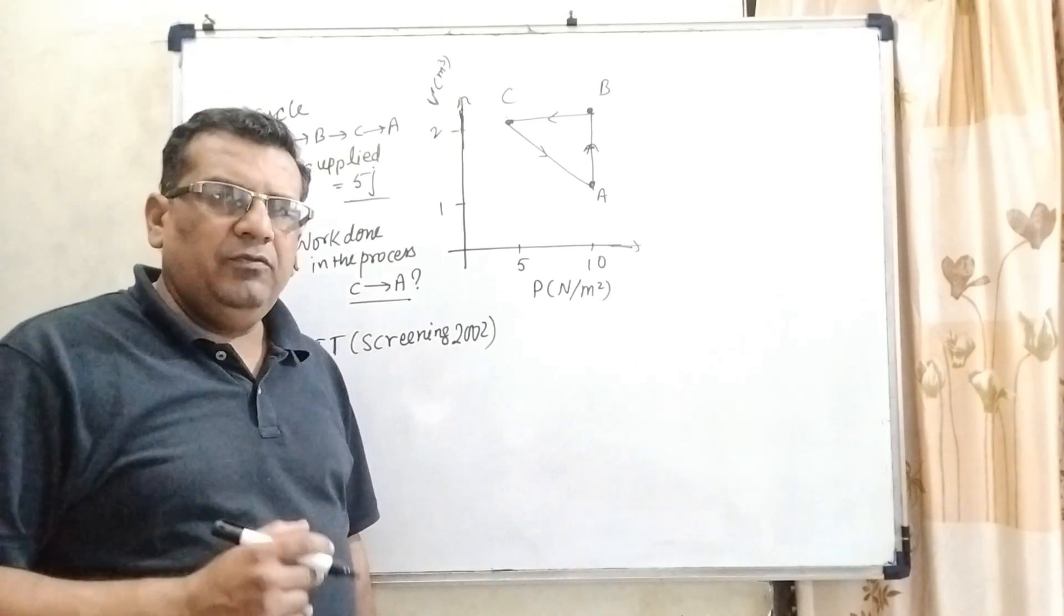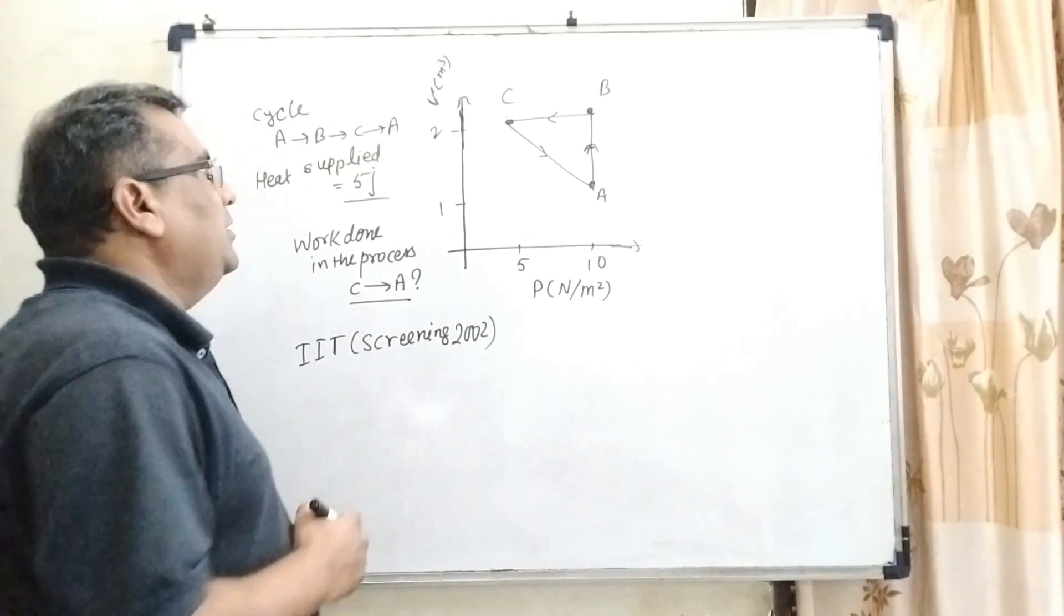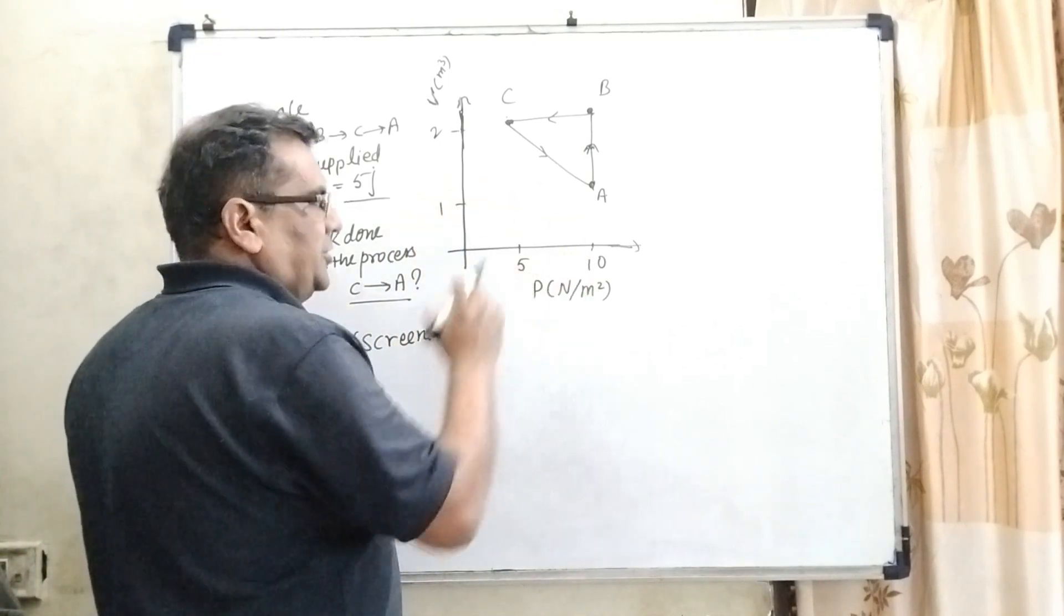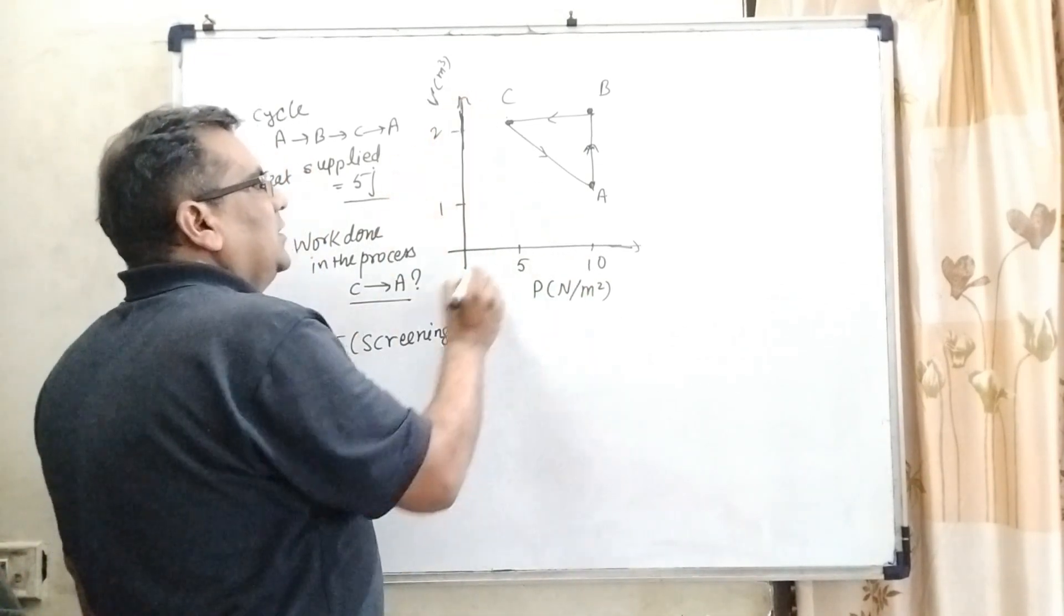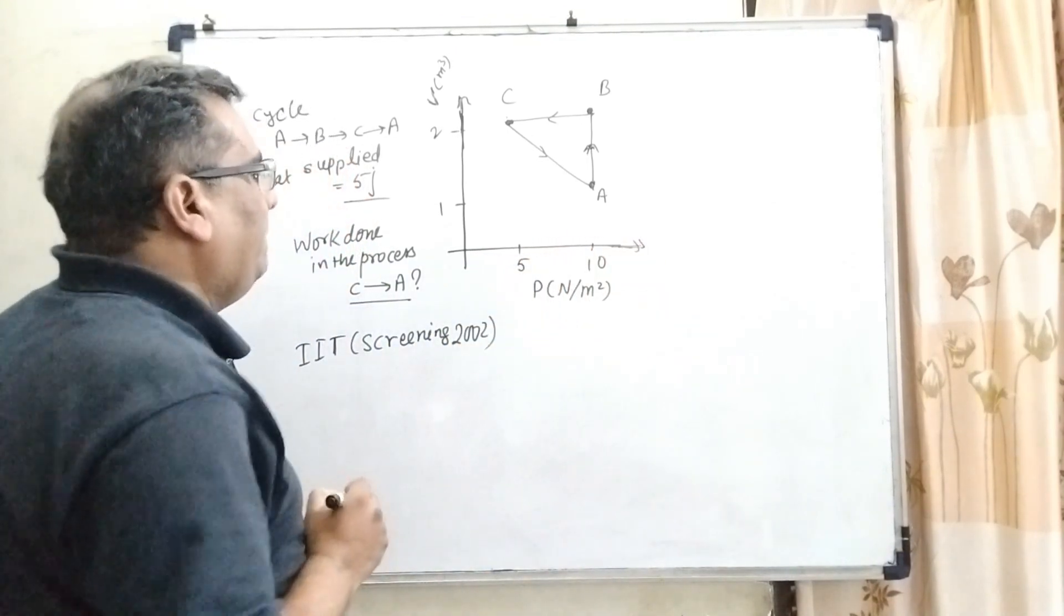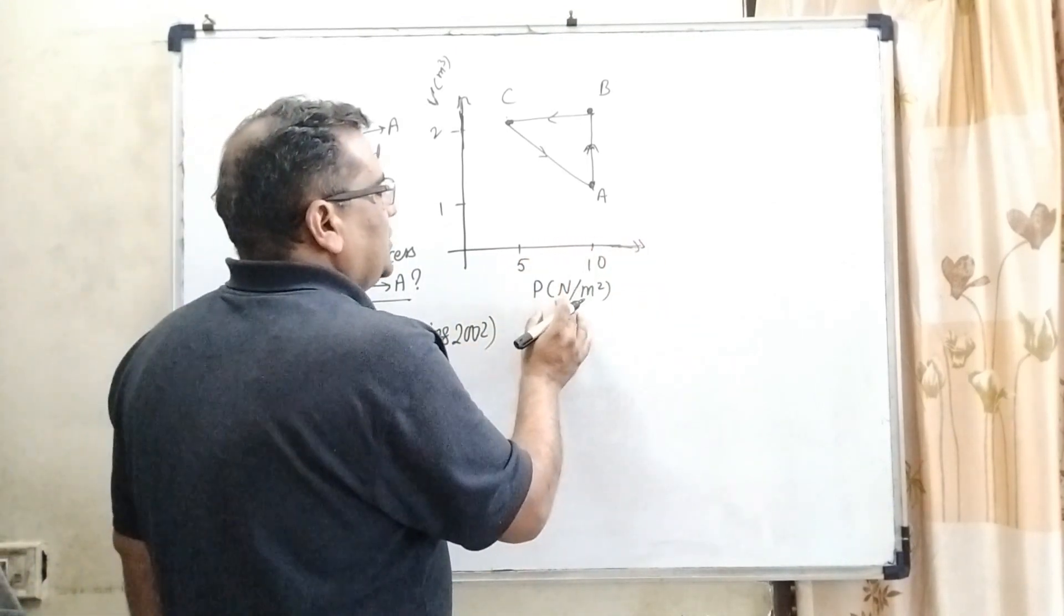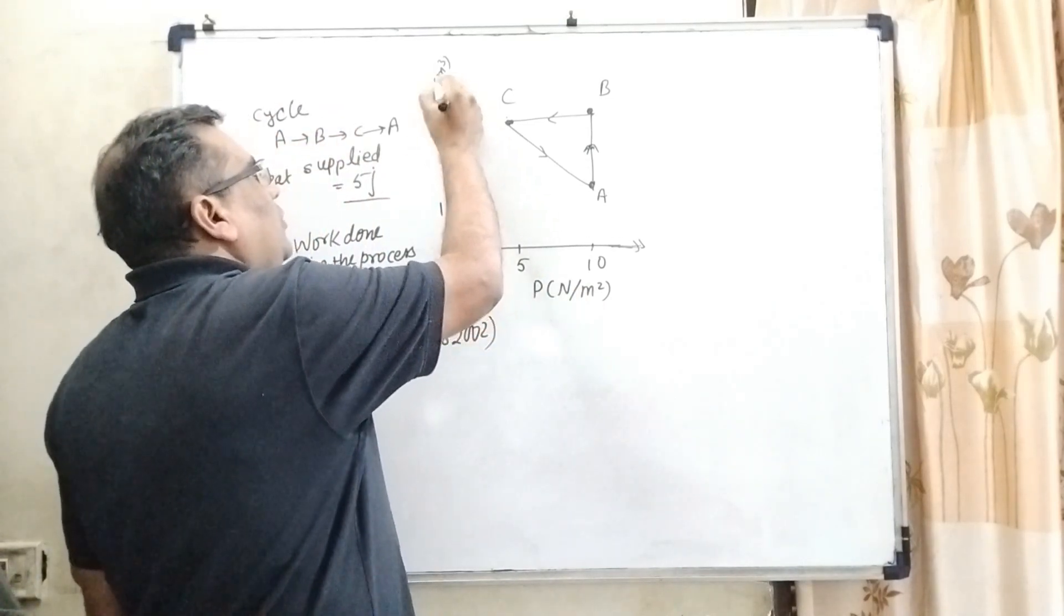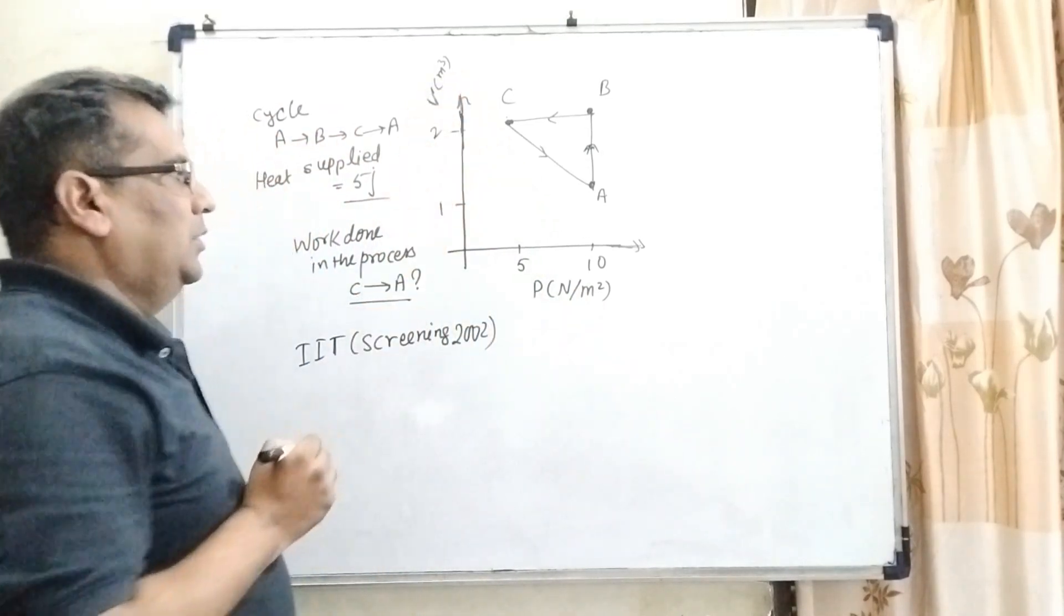In this question, we have given a graph which is plotted between volume and pressure. Here volume shows the y-axis and here pressure shows the x-axis. And the unit of pressure is Newton per meter square, and the unit of volume is meter cube.